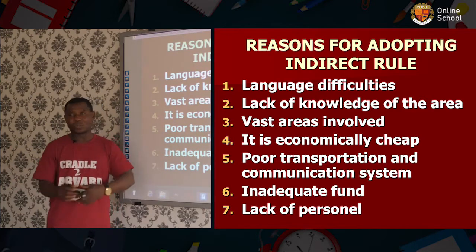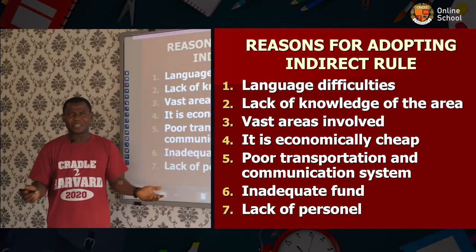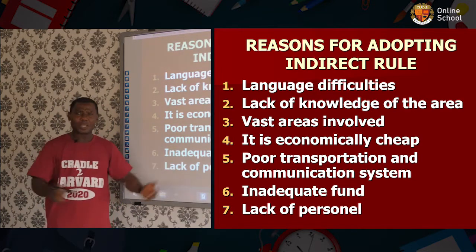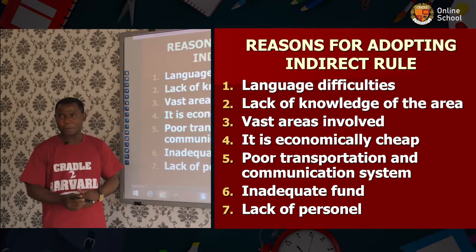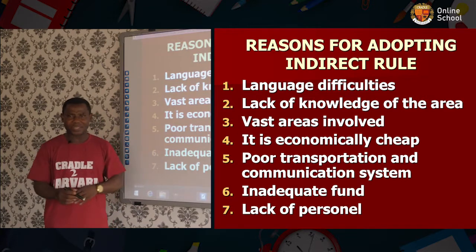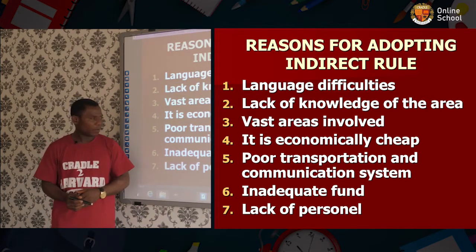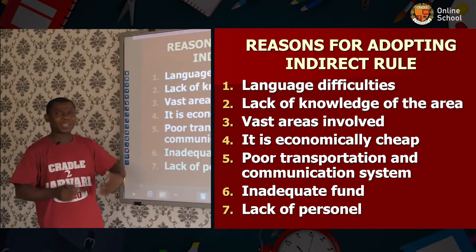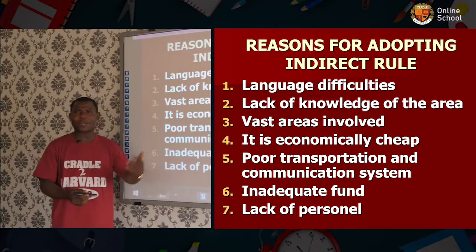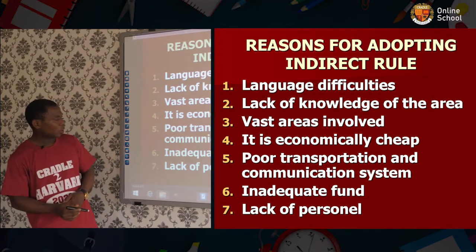Reason five: poor transportation and communication. At that time there were very few roads and railways, and they found it very hard to travel to every part of the country. So they stayed within the city and tried to administer the rest of the areas from there. There was nothing like telephone as there is now, so they found it very hard to communicate.